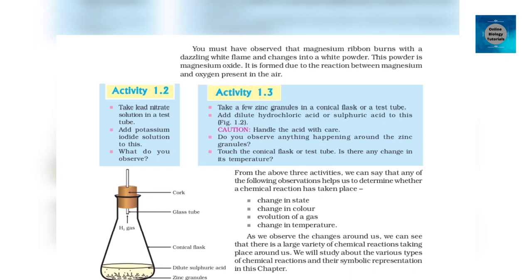Activity 1.2: Take lead nitrate solution in a test tube. Add potassium iodide solution to this. What do you observe? Activity 1.3: Take a few zinc granules in a conical flask or a test tube. Add dilute hydrochloric acid or sulfuric acid to this at Figure 1.2. Caution: handle the acid with care. Do you observe anything happening around the zinc granules? Touch the conical flask or test tube. Is there any change in its temperature?